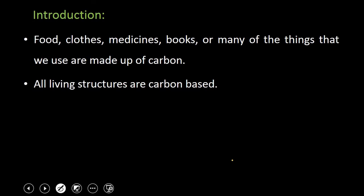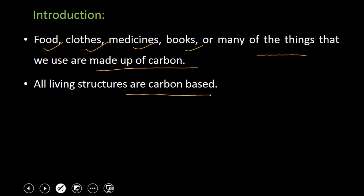If you see around you, you will find many items — like food, clothes, medicine, books, and many other things. If you look at these things internally, you will find that all these things are made up of carbon. The table you use, the pen, the clothes you wear, the food you eat — each and everything is made up of carbon. Even our living structures are carbon-based. So we are fully surrounded by carbon, but we are not aware of this fact.